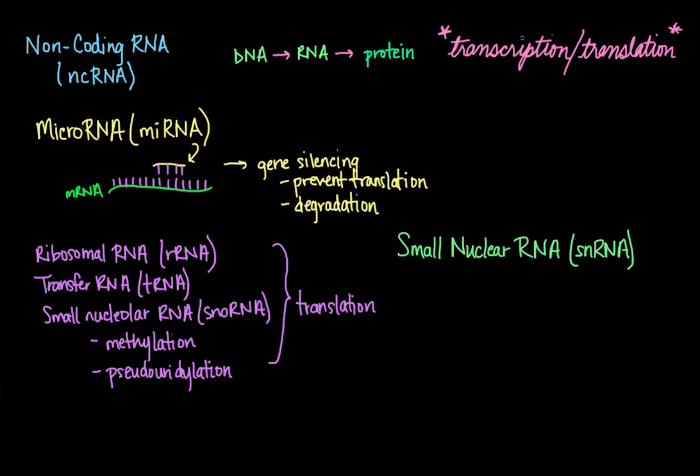Small nuclear RNAs get their name from the fact that the average length of these RNA molecules is approximately 150 nucleotides. And their primary function is in the processing of pre-mRNA in the nucleus.